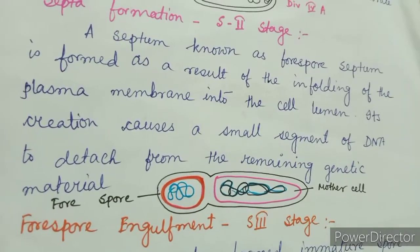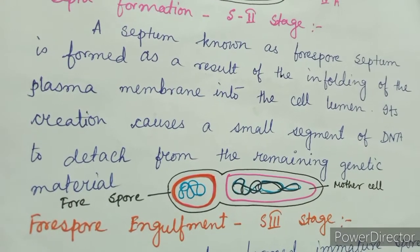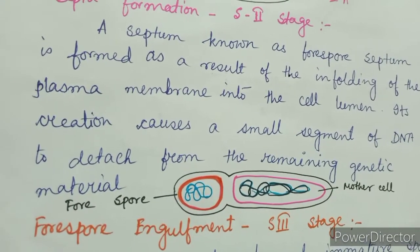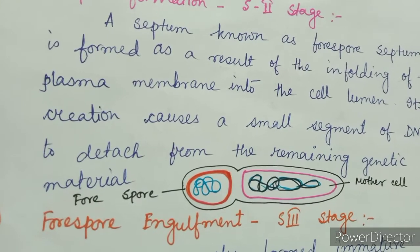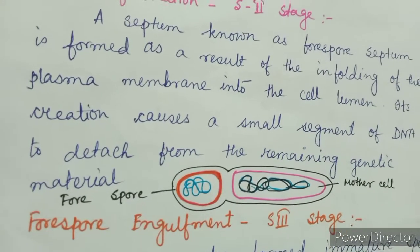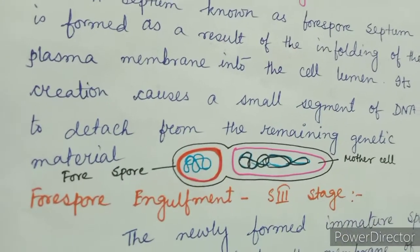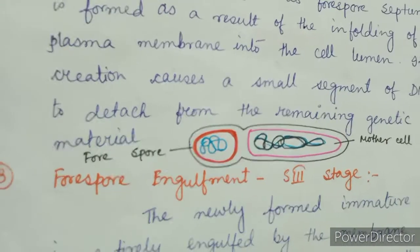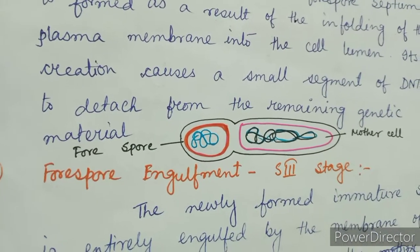Most importantly, the cell is divided into two compartments, and each compartment contains a chromosome separately. The third stage is forespore engulfment, Stage 3.